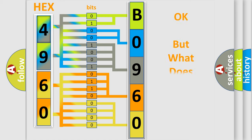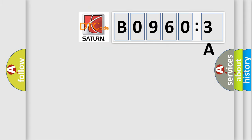The number itself does not make sense to us if we cannot assign information about it to what it actually expresses. So, what does the diagnostic trouble code B09603A interpret specifically?